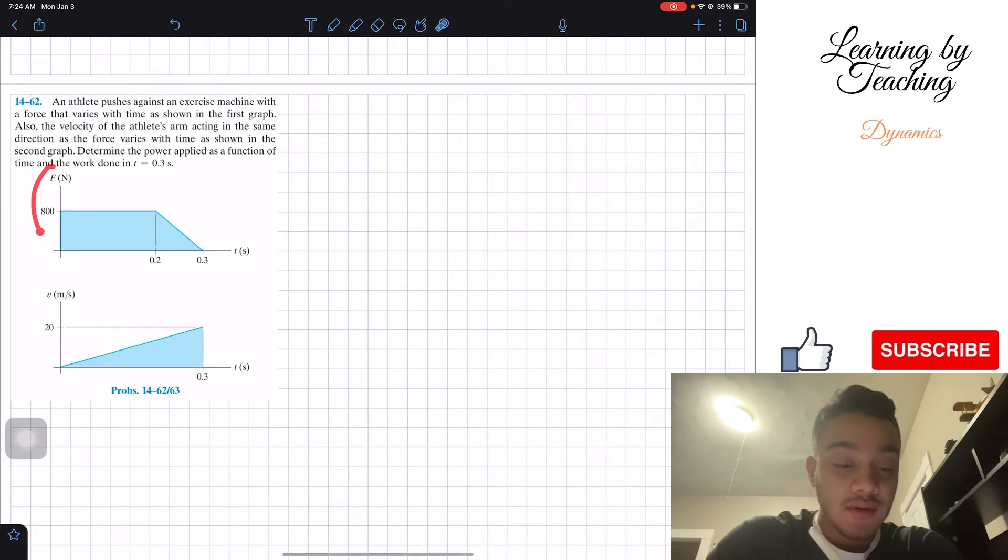So what we have in here is our force as a function of time, and here we got our velocity as a function of time. In order to solve this problem, what we need to do is we need to follow our equation 14.10 for our power equation, that is force times velocity. Since we're given the force and the velocity as functions of time, what we can do is find our power as a function of time as well. First thing to notice is that our force is breaking into two time intervals. Our first time interval is from 0 to 0.2, and our second time interval is from 0.2 to 0.3. So we're going to start doing our problem by breaking those time intervals.